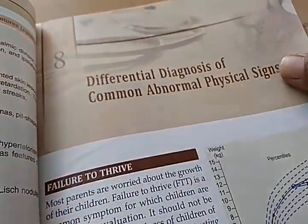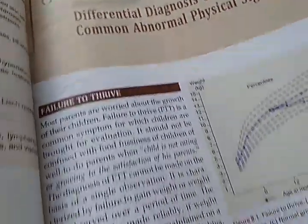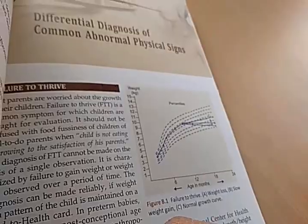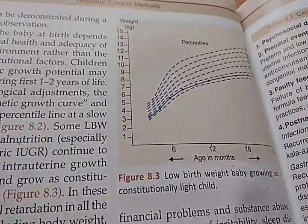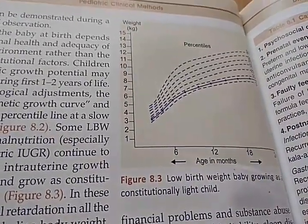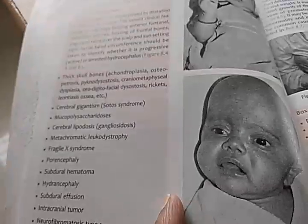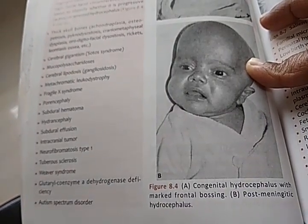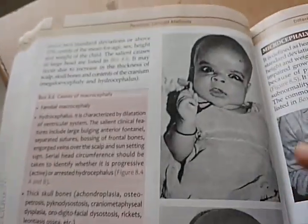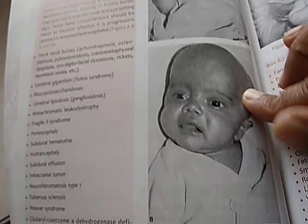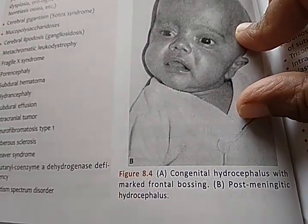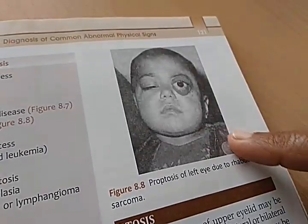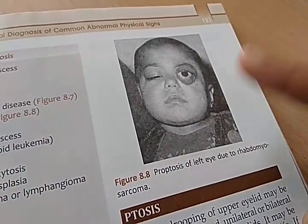Chapter 8 is on differential diagnosis of common abnormal physical signs. They show failure to thrive, a low birth weight baby growing as a constitutionally light child, hydrocephalus with marked frontal bossing — including congenital hydrocephalus and post-meningitic hydrocephalus — and rhabdomyosarcoma causing proptosis of the left eye.